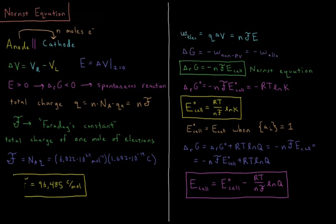We're interested in what electrical work can be achieved by these electrons. From general physics, electrical work equals the total charge times the change in electrical potential that the charged particles experience. The change in potential our electrons experience is E, the EMF, and the total charge is N times Faraday's constant. So the maximum electrical work these electrons can do is N times Faraday's constant times the EMF.